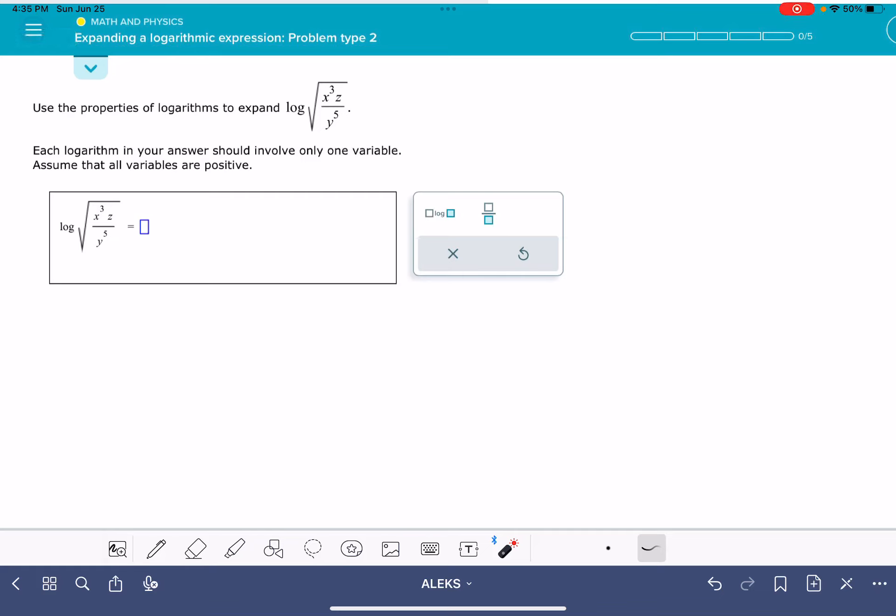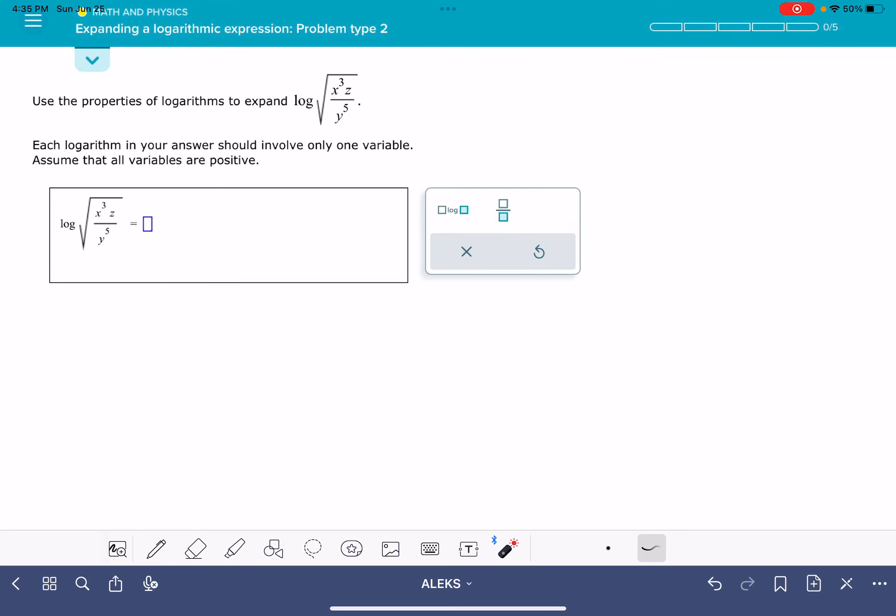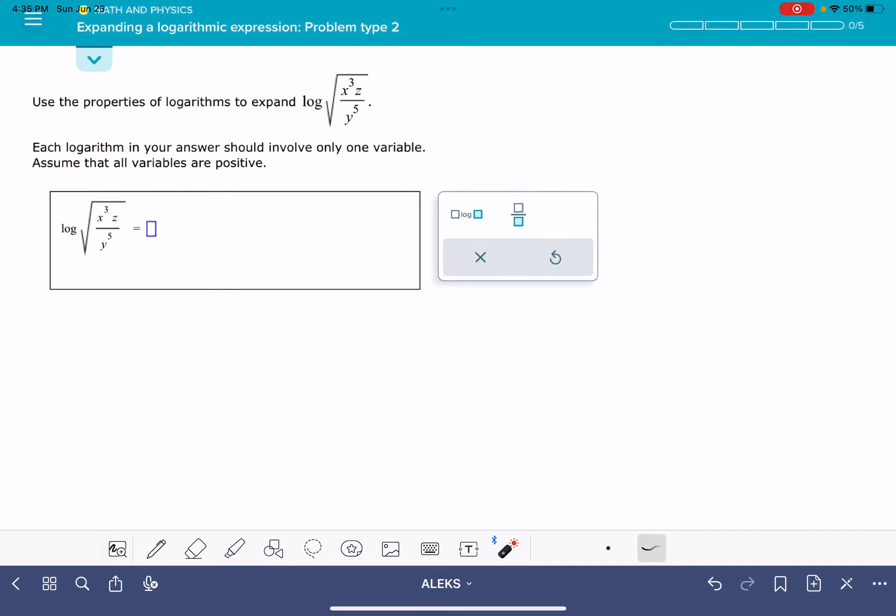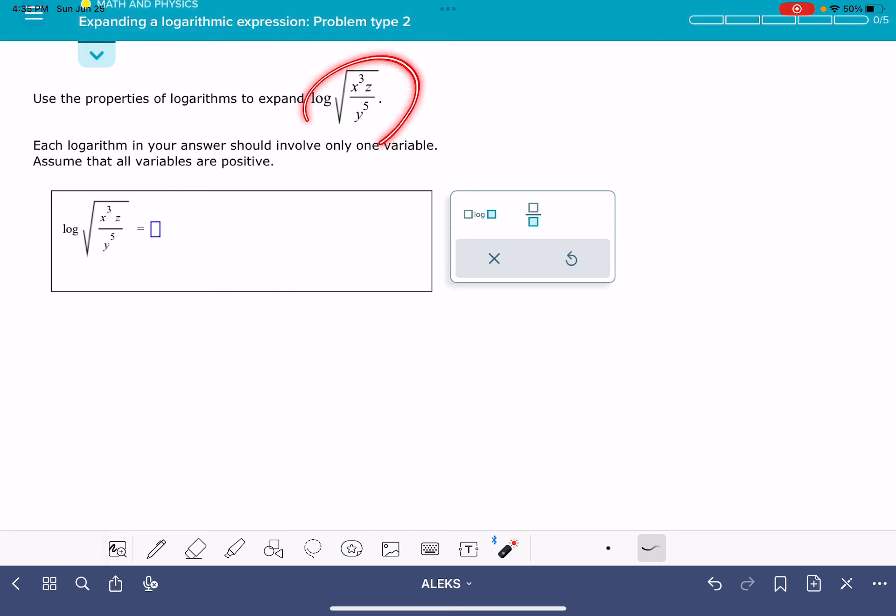In this video, we're going to work on the ALEKS problem called Expanding a Logarithmic Expression Problem Type 2. This problem is going to give you a pretty complicated log expression, and it wants you to simplify it. Every log in your answer should only involve one variable. I'll explain exactly what ALEKS means by that, and let's just get into it.